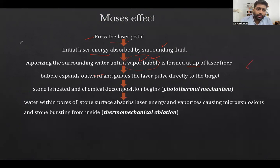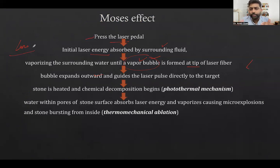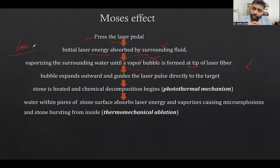How does the energy transferred to the stone cause lithotripsy? There are different mechanisms. One is the photothermal mechanism — the heat generated in the stone by the transmitted water vapor bubbles causes stone fragmentation. Additionally, water vapor bubbles within the stone composition expand and cause micro-explosions within the stone, further contributing to fragmentation.